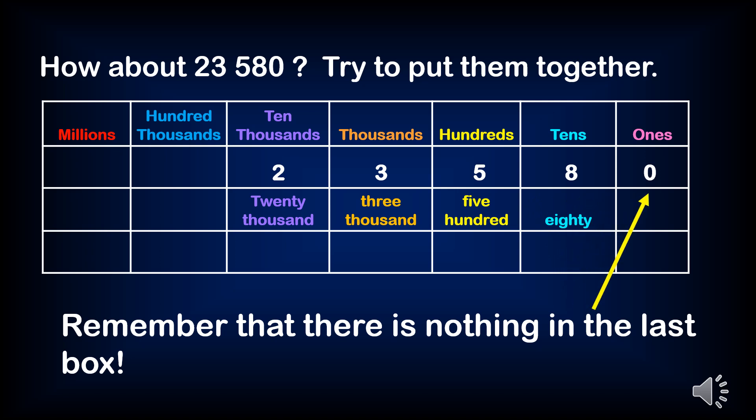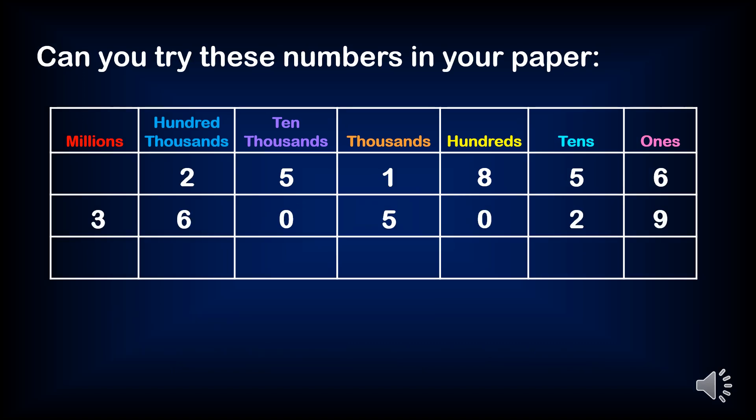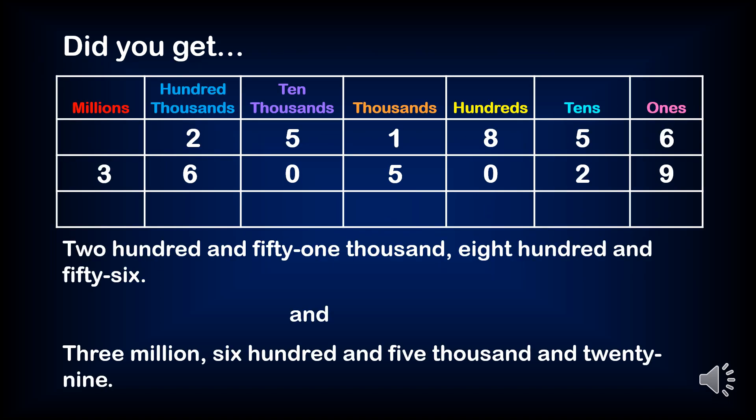Remember, there is nothing in the last box. Our number is twenty three thousand five hundred and eighty. Can you try these numbers in your paper? Did you get two hundred and fifty one thousand eight hundred and fifty six, and three million six hundred and five thousand and twenty nine?